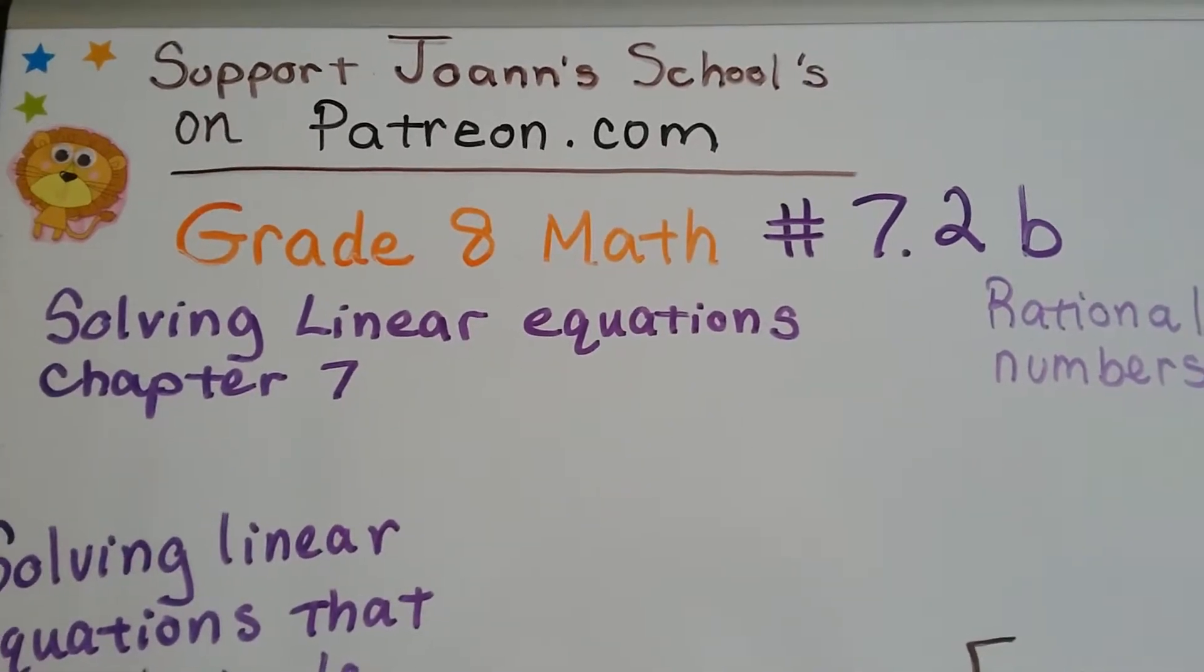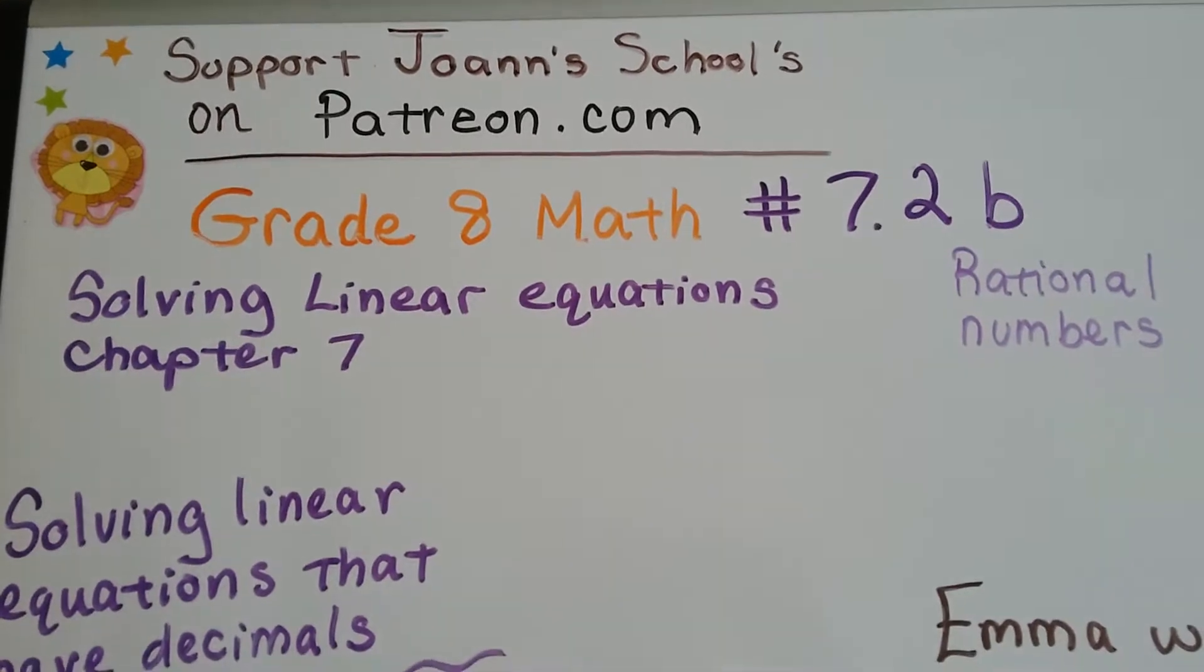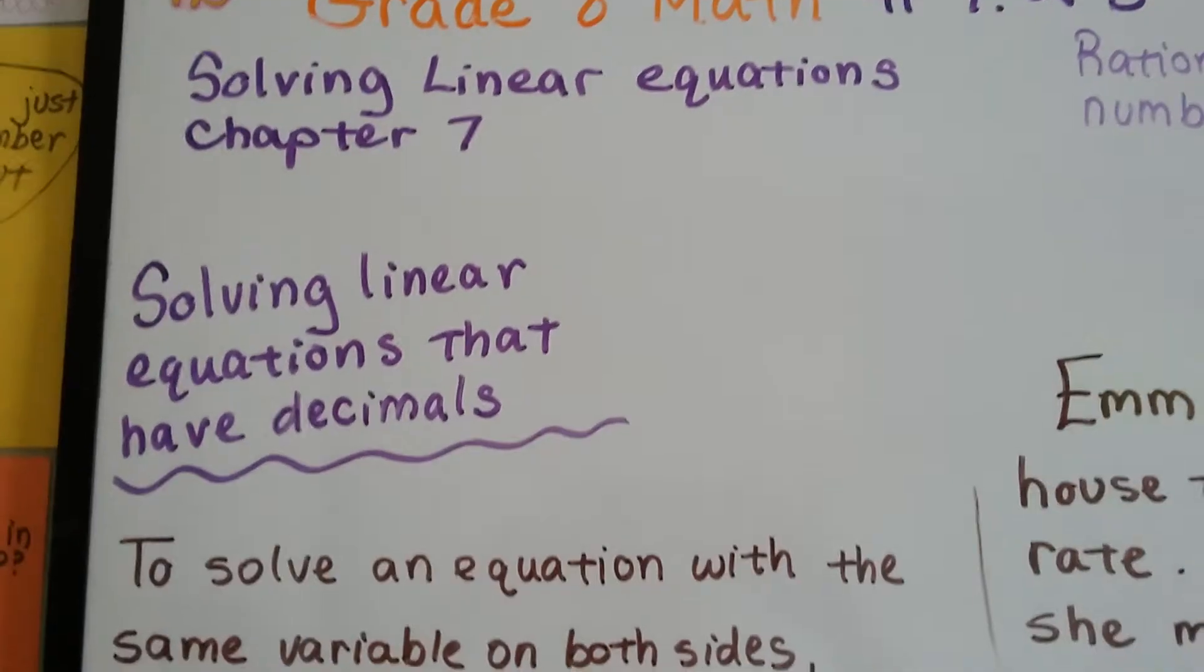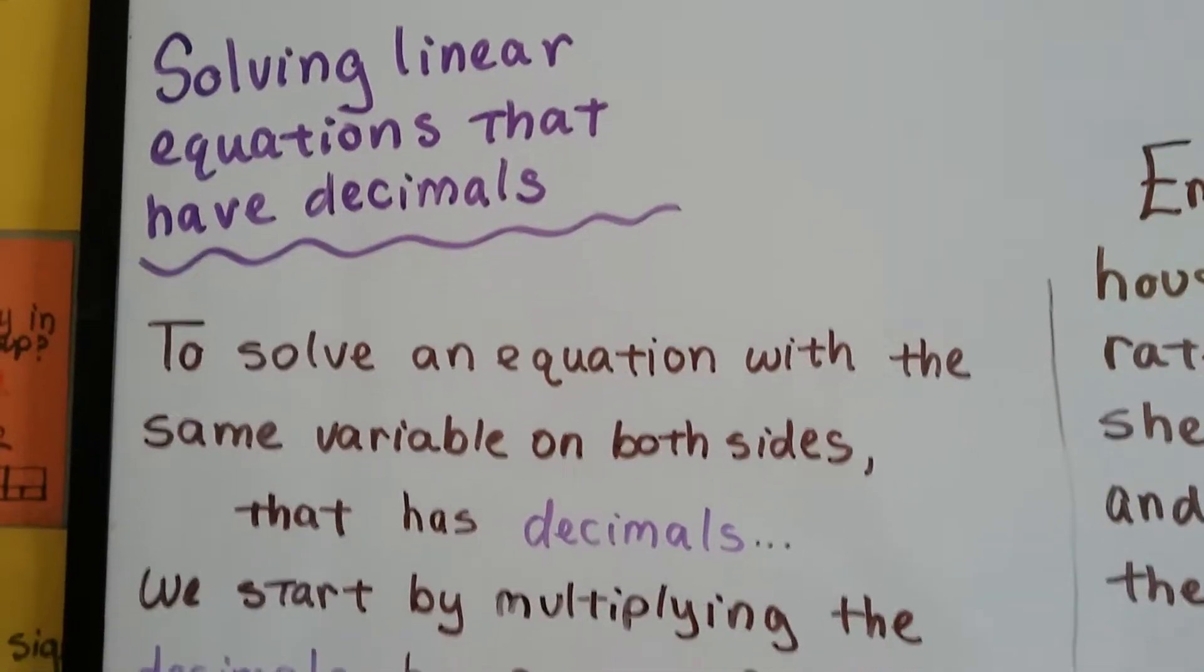Grade 8 math number 7.2b. This whole chapter is about solving linear equations. We're doing rational numbers, now we're doing decimals. Solving linear equations that have decimals.